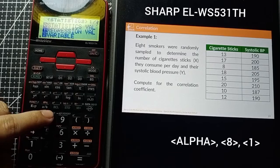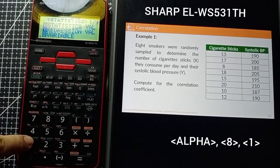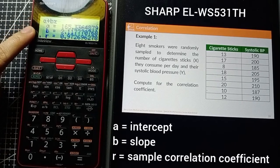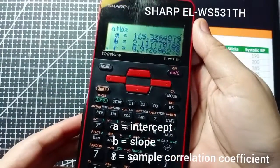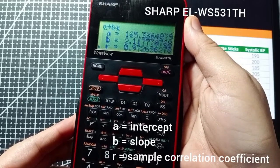Then 8, then 1, and on your screen it will appear. You have three values: A for intercept, B for slope, and R for sample correlation coefficient.